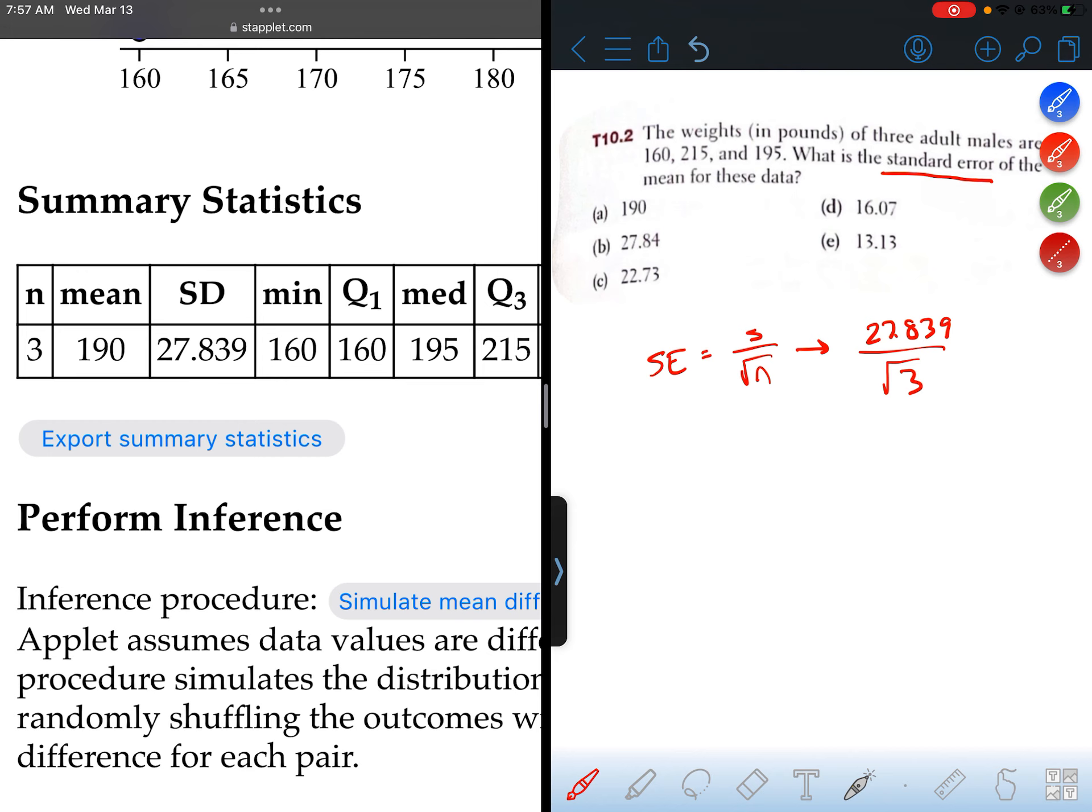Okay, so let's grab a calculator and figure out what this is. 27.839 divided by the square root of 3 is about 16.07, which matches choice D.